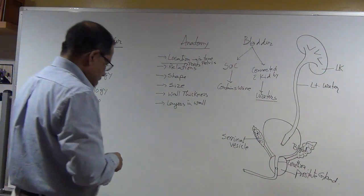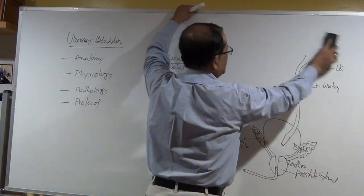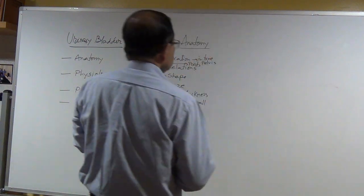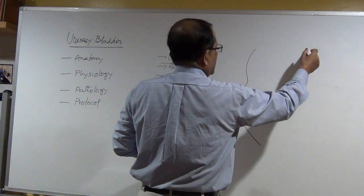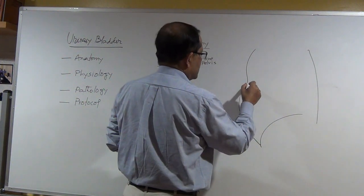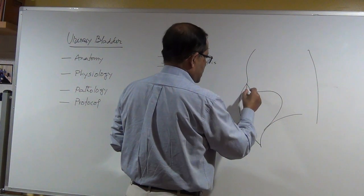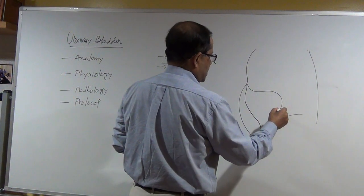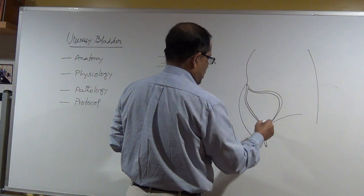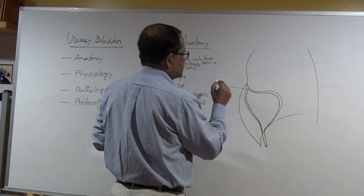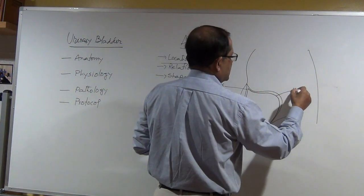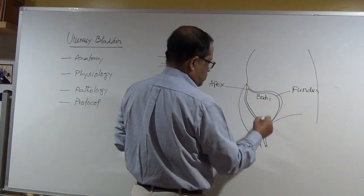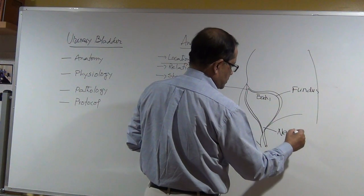Now the parts of the bladder: we call the top the apex, the posterior part is the fundus, the middle is the body, and opposite the apex is the neck.